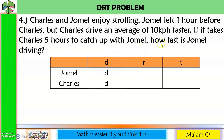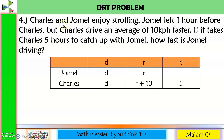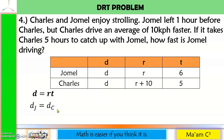For Jomel's rate, that is what we are looking for — let this be R. The rate of Charles is 10 km per hour faster than Jomel, so R plus 10. It took 5 hours for Charles to catch up, so Charles's time is 5. But Jomel left 1 hour before, so Jomel's time is 5 plus 1 equals 6. Distance equals rate times time. Distance of Jomel is R times 6, or 6R, equal to distance of Charles, which is (R plus 10) times 5.